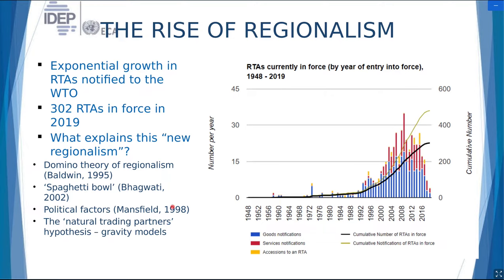One of the earlier theories came from Baldwin. Baldwin talks in terms of the domino theory of regionalism. His argument is that when NAFTA — the North American Free Trade Area comprising the United States, Mexico, and Canada — was formed in 1994, many countries felt they were left aside. They didn't participate in this agreement. So the formation of NAFTA created what Baldwin calls pressures for inclusion. Countries that did not belong to NAFTA wanted to form regional trade arrangements of their own, leading to a sort of scramble among other countries to join together into similar arrangements.